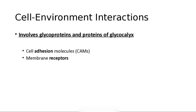This is chapter three, the second part, and we'll continue to talk about cells. Cell-to-cell and cell-to-environment interactions involve glycoproteins and proteins of the glycocalyx. These are somewhat of a name tag on your cell.